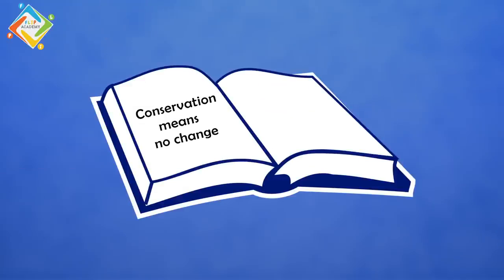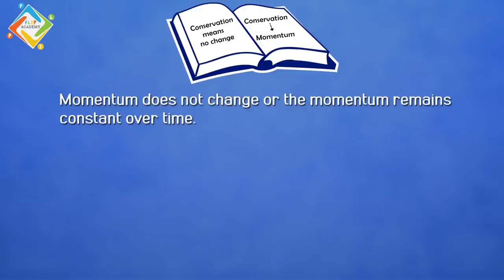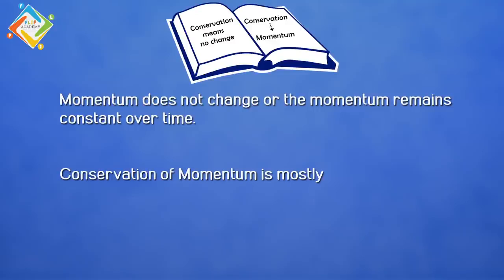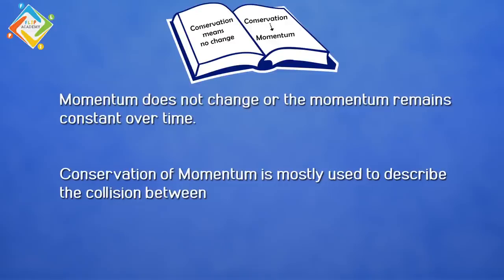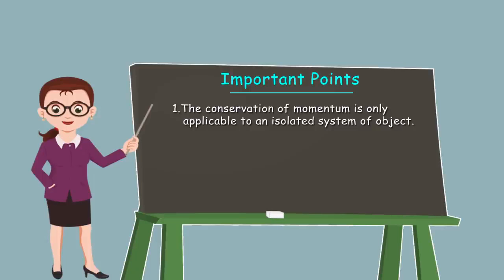In momentum physics, conservation ka matlab hai 'no change.' If we apply conservation with momentum, it means momentum does not change — the momentum remains constant over time. Conservation of momentum is mostly used to describe the collisions between objects. The important point to note is that conservation of momentum is only applicable to an isolated system of objects.